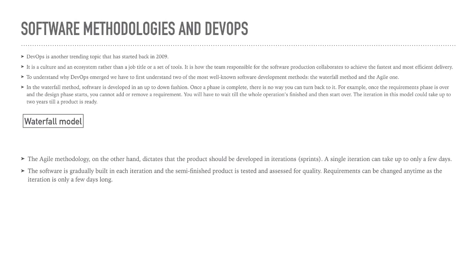In order to understand DevOps — what it is, how you can use it, and why you should or should not use it — let's first discuss software methodologies and how software is developed from start to finish. DevOps is a culture and an ecosystem rather than a job title or a set of tools. It is how the team responsible for software production collaborates to achieve the fastest and most efficient delivery of a software product. To understand why DevOps emerged, we first need to understand two well-known software development methods: the waterfall method and the agile one.